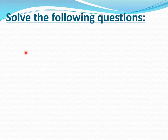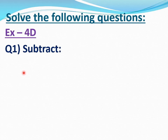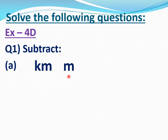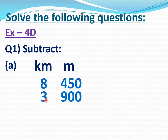Now solve the following questions. Exercise 4D, Question Number 1, Subtract A part. Write down as it is: kilometer, meter. Write first number: 8 kilometers 450 meters. Now write second number: 3 kilometers 900 meters. Now subtract this.